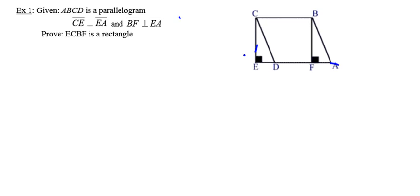In this first problem, we're given figure ABCD, which is a parallelogram. I'm going to highlight that figure as an indication that it's a parallelogram with all of the properties of a parallelogram. In addition, segments CE and EA are perpendicular, as are segments BF and EA, and they've already marked those in the picture. Our goal is to prove that figure ECBF is a rectangle.